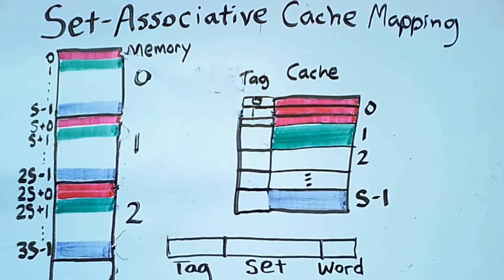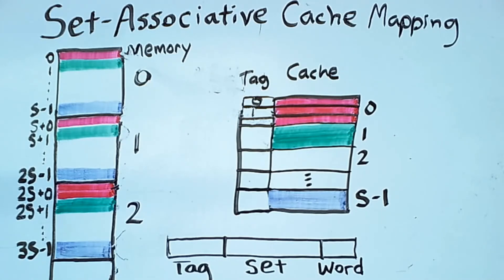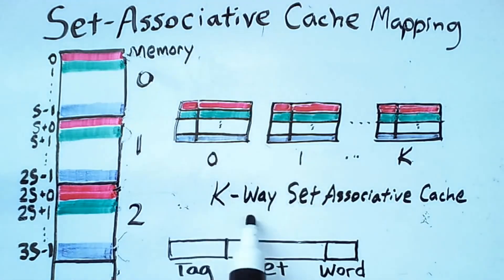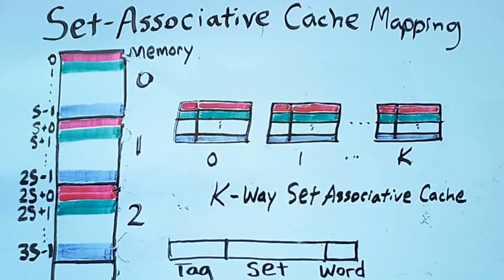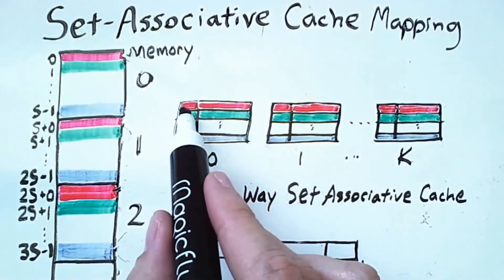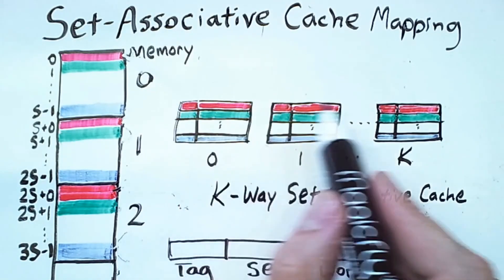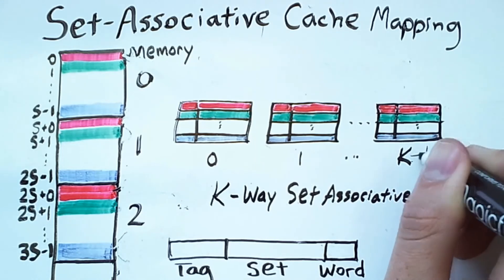However, instead of implementing my set associative cache by using several associatively mapped caches, I could instead implement it as several parallel directly mapped caches. Such a configuration is known as a k-way set associative cache, where k is the number of distinct directly mapped caches used in the configuration. Here, the individual sets are spread out across the different directly mapped caches. So we have k distinct direct caches, and this block 0 in memory chunk 0 could be the first line of cache 0, or the first line of cache 1, or of any of the other caches, or the first line of cache k-1.